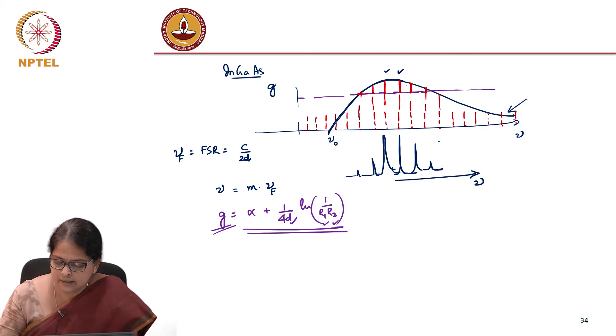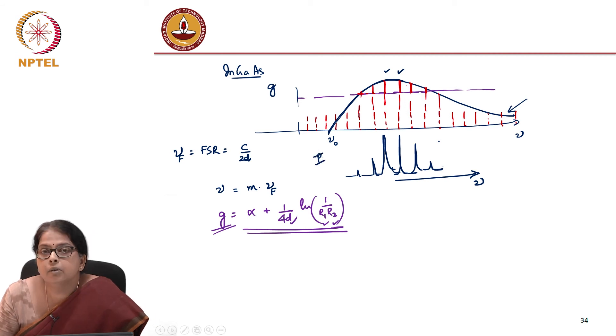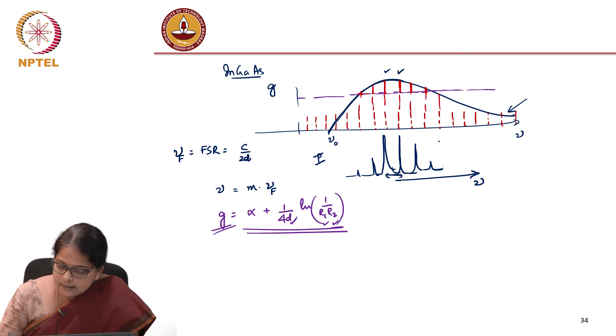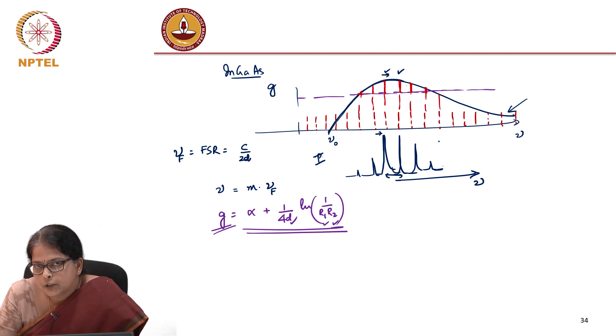This is the frequency versus roughly the output intensity. This is how it is going to look like. The separation between the modes is decided by the spacing between the modes, while the power laser gets decided by how much is the gain coefficient.